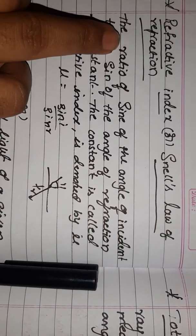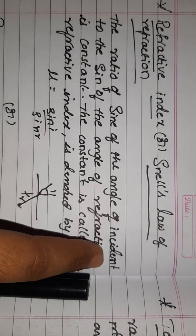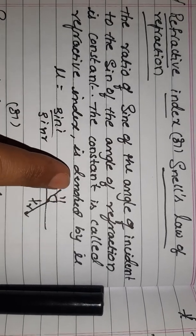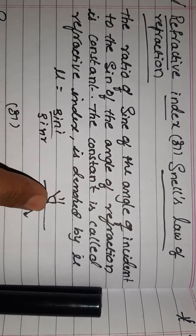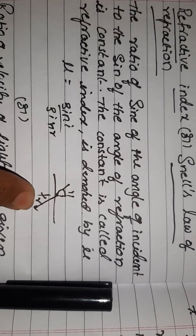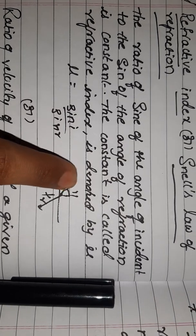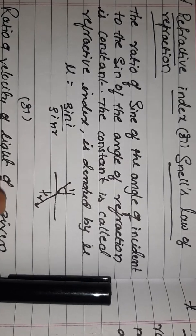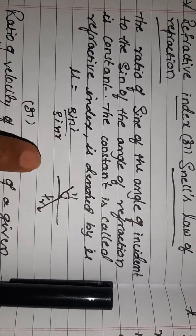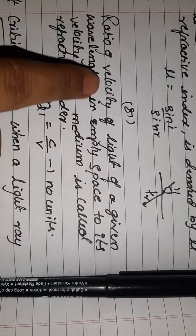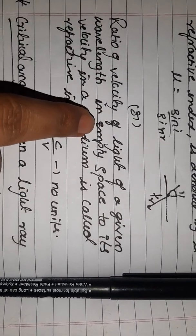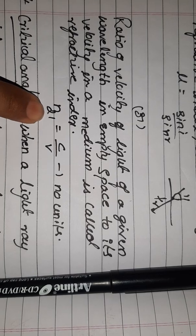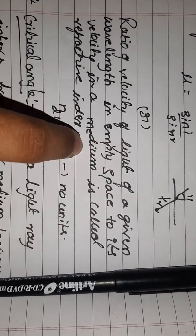The ratio of the sine of the angle of incidence to the sine of the angle of refraction is constant. Also, the refractive index n₂₁ is equal to c divided by v — the ratio of the velocity of light of a given wavelength in empty space to its velocity in the medium. The refractive index has no units.